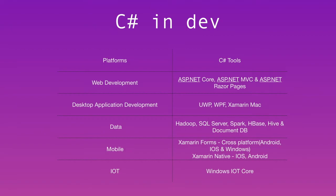For desktop application development in C#, there is the awesome UWP — Universal Windows Platform. Using UWP, you can target Windows 10 desktops, tablets, phones, Xbox, and a lot of other platforms, which is why it is called Universal.